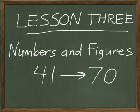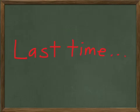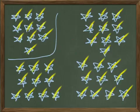Today we're going to cover from 41 through 70. Just to review a little bit from what we did last time, remember we drew those stars on the board and we had groups of 10. The first group was from lesson 1, where we counted from 1 through 10, and then in lesson 2 we counted from 11 all the way through 40. So today we're going to pick it up at 41 and count through 70.